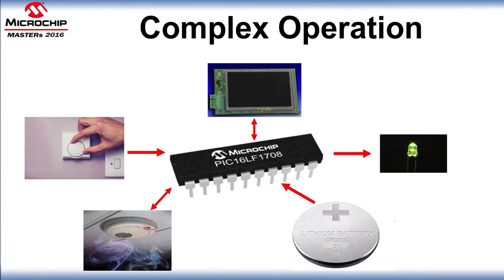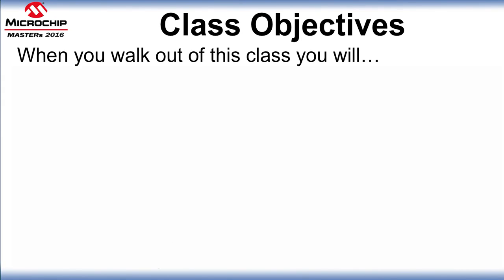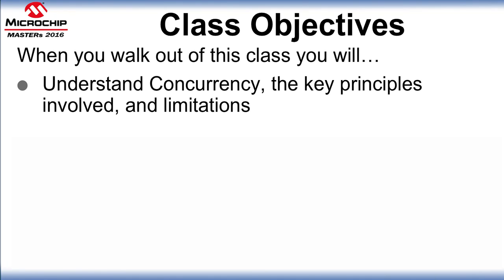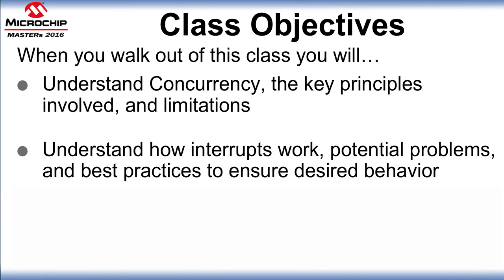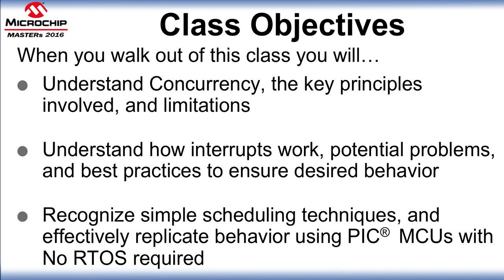To achieve these goals we will be required to schedule our operations through cooperative or preemptive processing, utilizing simple but powerful techniques. This class will ensure that when you walk out you will understand concurrency — the key principles involved and limitations — understand how interrupts work, potential problems with them, and best practices to ensure the desired behavior, and recognize simple scheduling techniques and effectively replicate the behavior using a PIC MCU with no RTOS required.